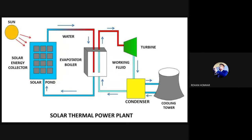The solar pond uses a liquid — essentially a brine solution — which has a lower boiling temperature. Because it has a lower boiling temperature, it will be initiated to convert into steam, and that steam is imposed on the turbine.